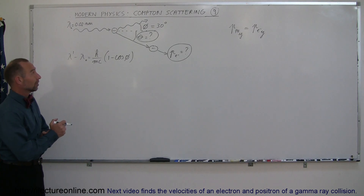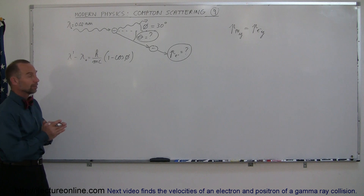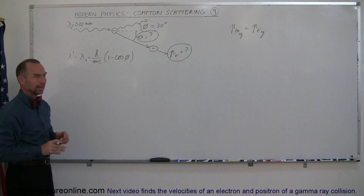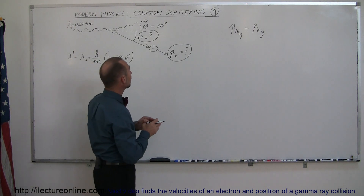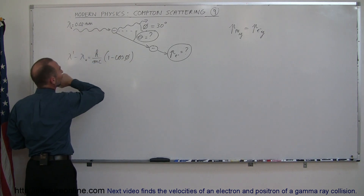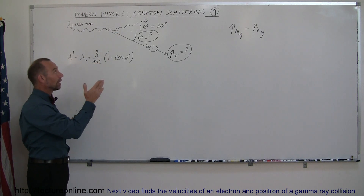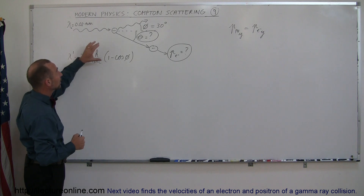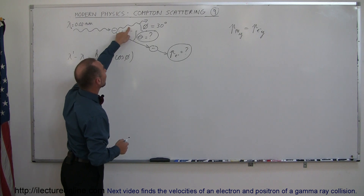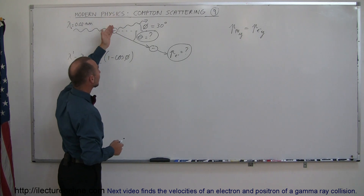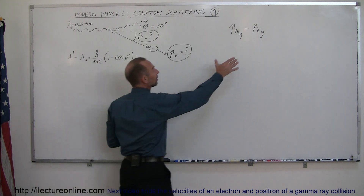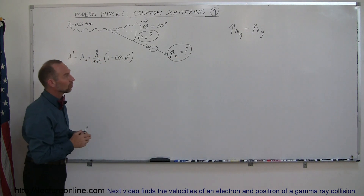Our next segment on modern physics is still Compton scattering, but in this case we're going to try to find the momentum of the scattered electron and also the direction of the scattered electron. In order to do that we're going to use the conservation of momentum. The incoming momentum is imparted by the incoming photon, which is only in the x-direction. That means there's no momentum in the y-direction, meaning after the collision the momentum in the y-direction should add up to zero, which means the y-component of the photon's momentum after the collision should equal the y-component of the electron's momentum. And that's what we have in this equation — the momentum in the y-direction should cancel out.